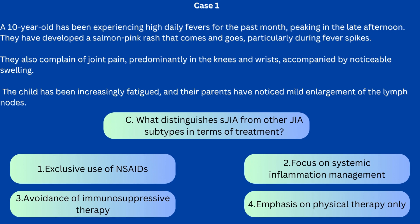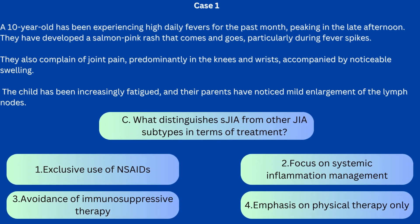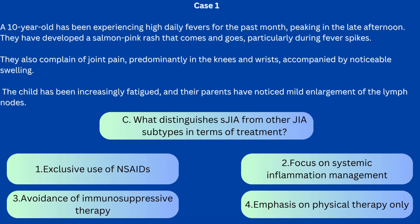Question C: What distinguishes systemic onset juvenile idiopathic arthritis from other JIA subtypes in terms of treatment? 1. Exclusive use of NSAIDs, 2. Focus on systemic inflammation management, 3. Avoidance of immunosuppressive therapy, 4. Emphasis on physical therapy only. The correct answer is 2. Treatment of systemic JIA differs from other subtypes due to its systemic nature. Management often requires a combination of anti-inflammatory and immunosuppressive medications to control both joint and systemic symptoms, as the systemic inflammation can affect organs beyond the joints, necessitating a broader treatment approach.